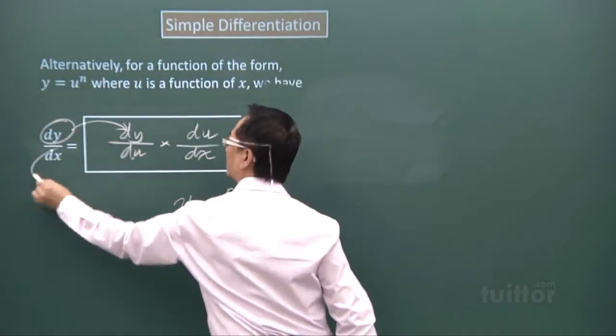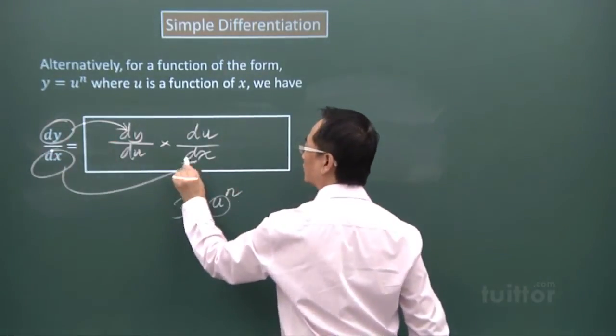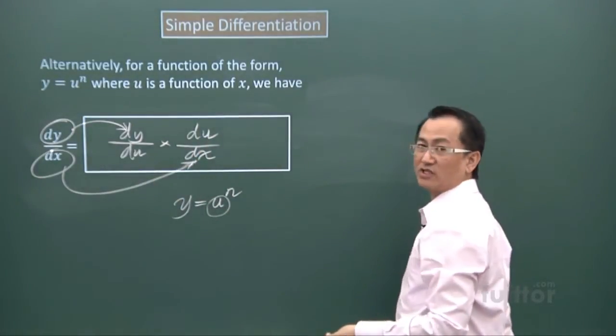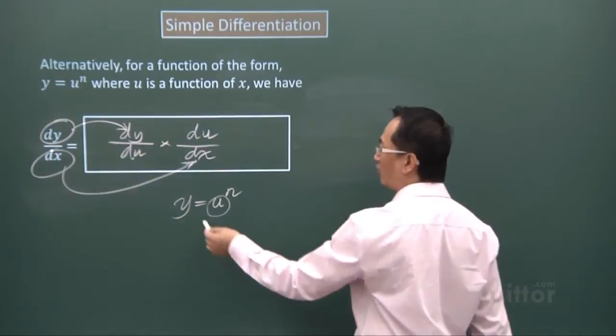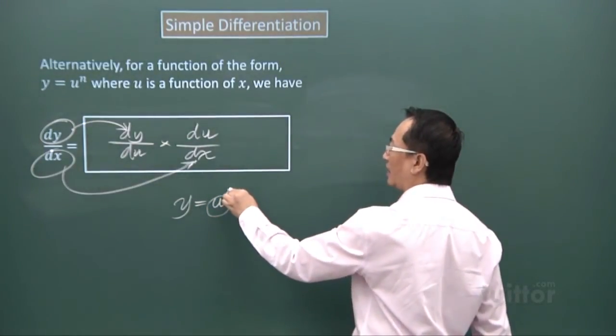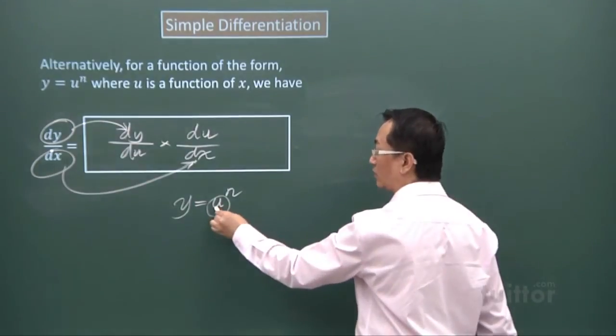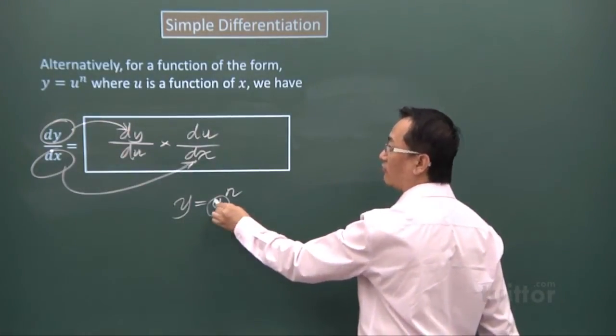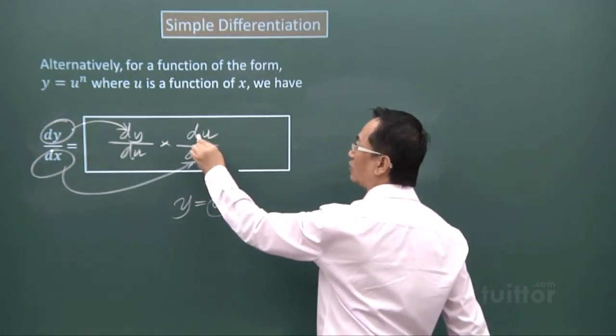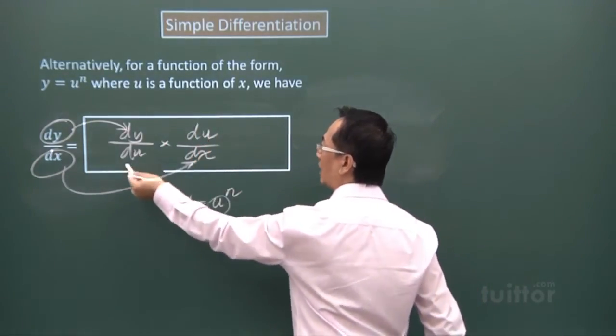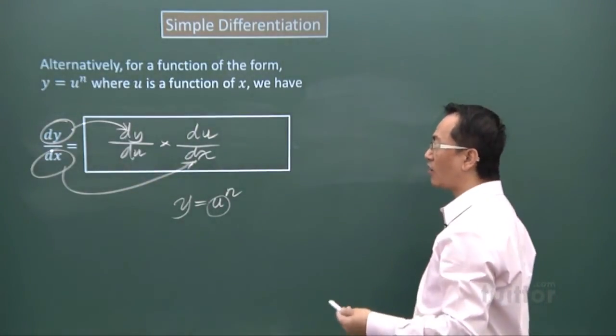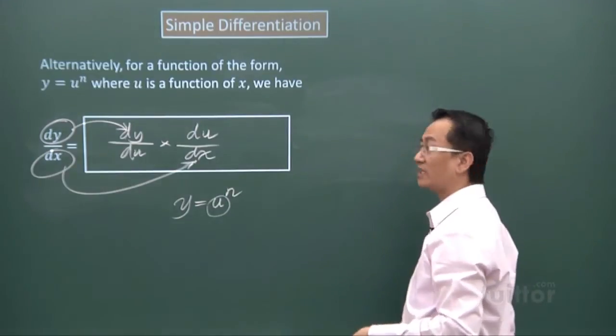Whatever functions you have—supposing I have y equals w to the power of n, and I tell you that w is a function of x—then that will not be du anymore; it will be dw. So that will change according to the expressions you're given. We have gone through a little bit on the symbols.